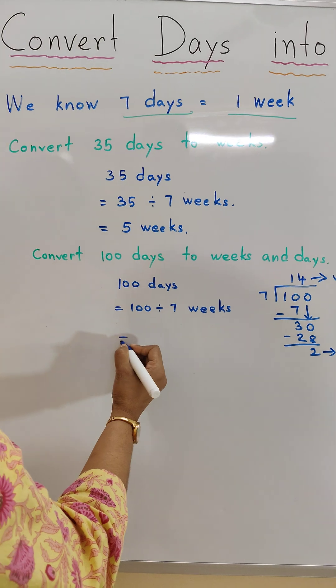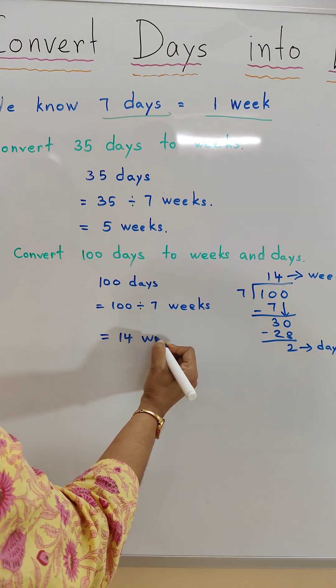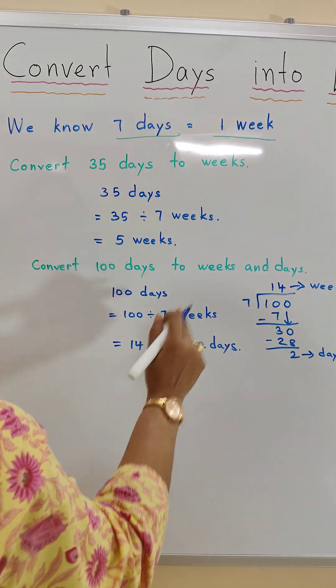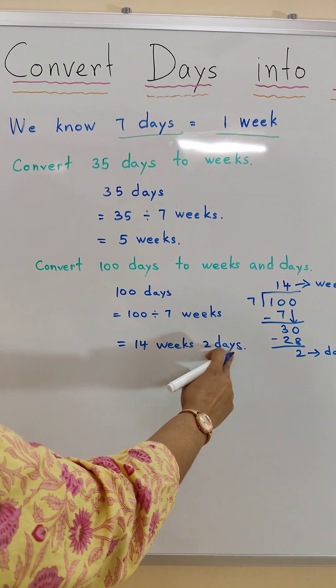So we get 14 weeks 2 days. So when we convert 100 days we get 14 weeks 2 days.